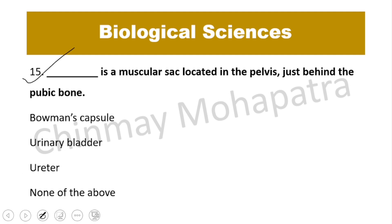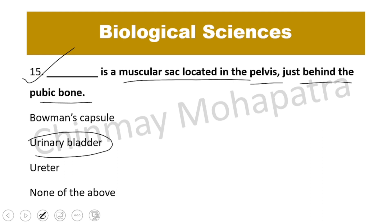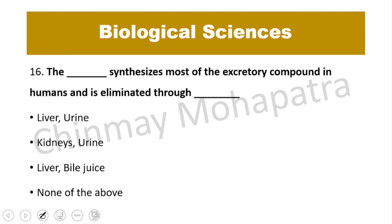Question number 15: What is the muscular sac located in the pelvis just behind the pubic bone? It is the urinary bladder, located behind the pubic bone in the pelvis region.